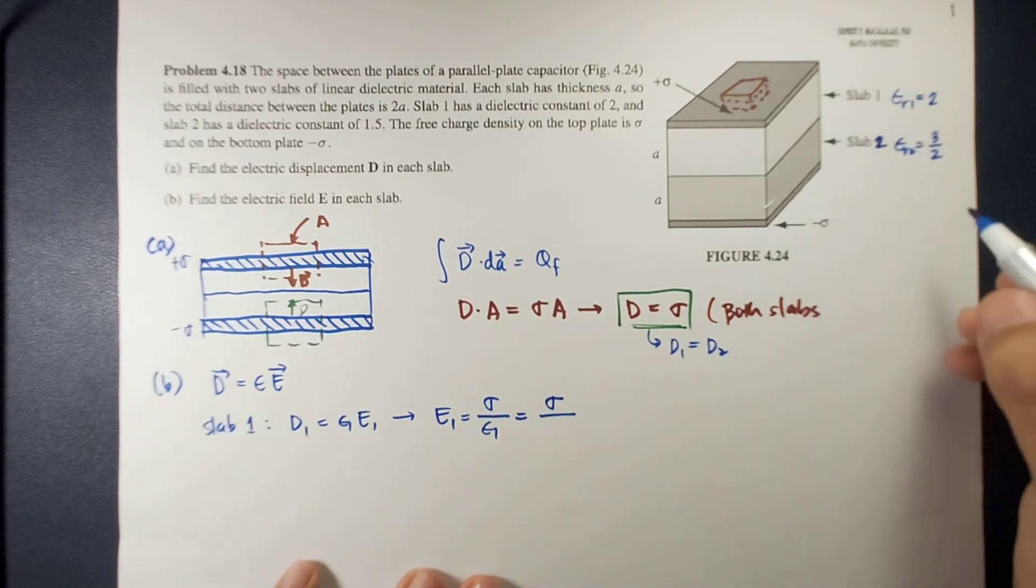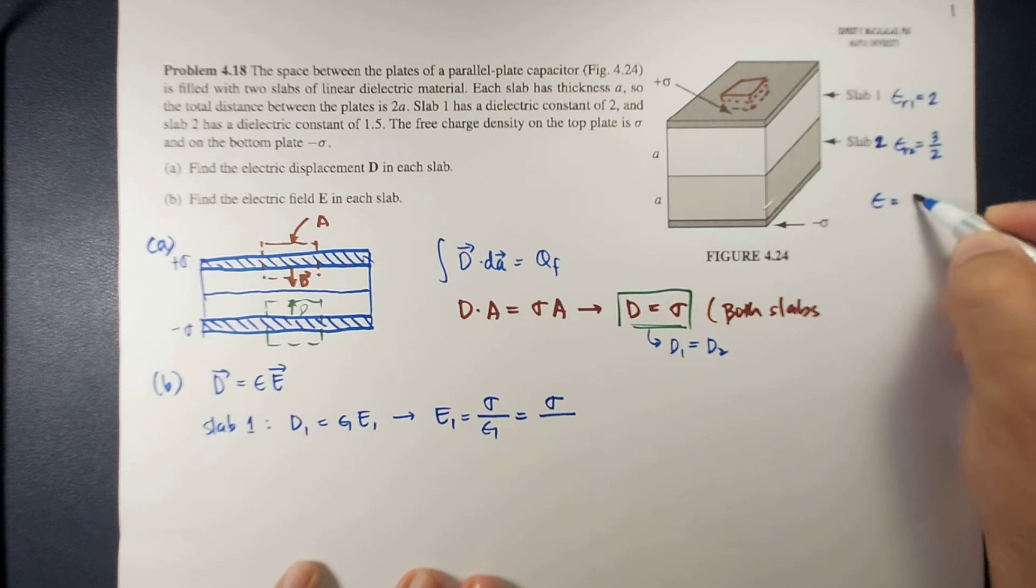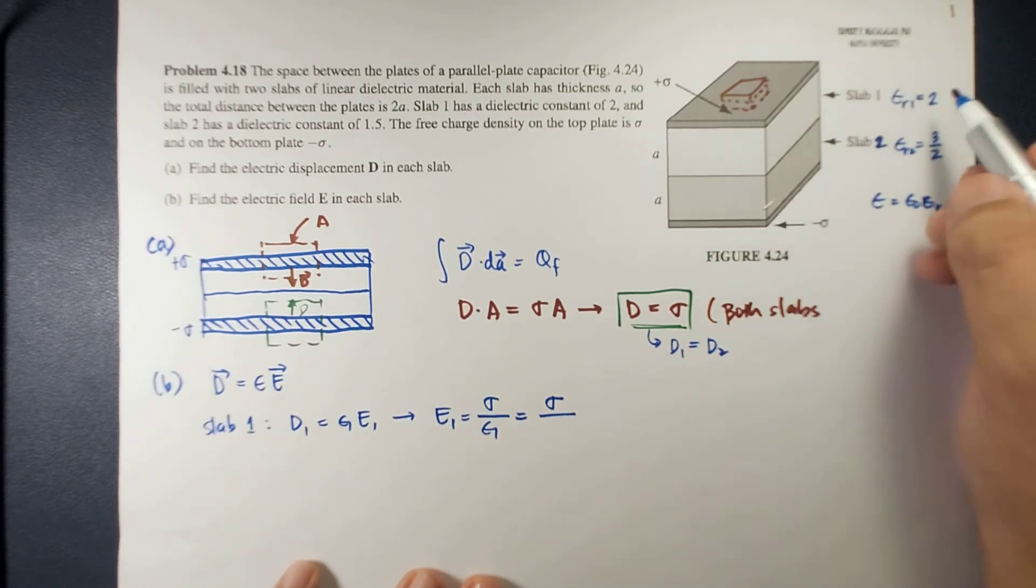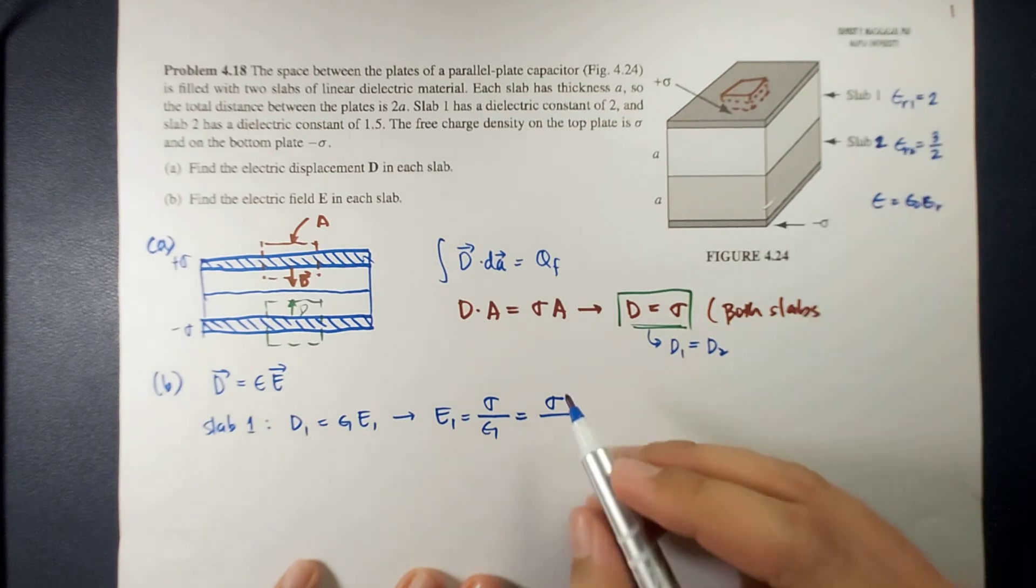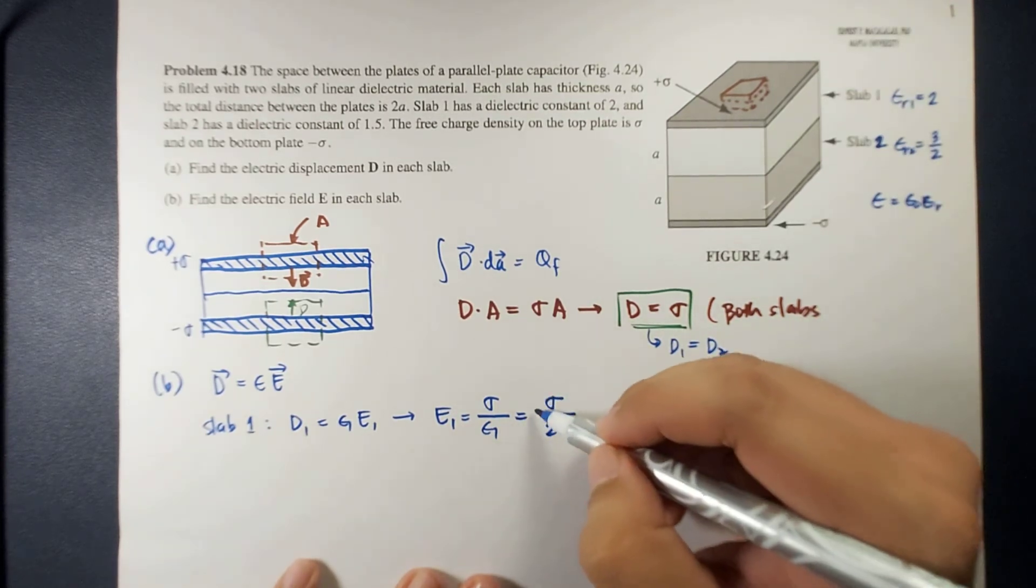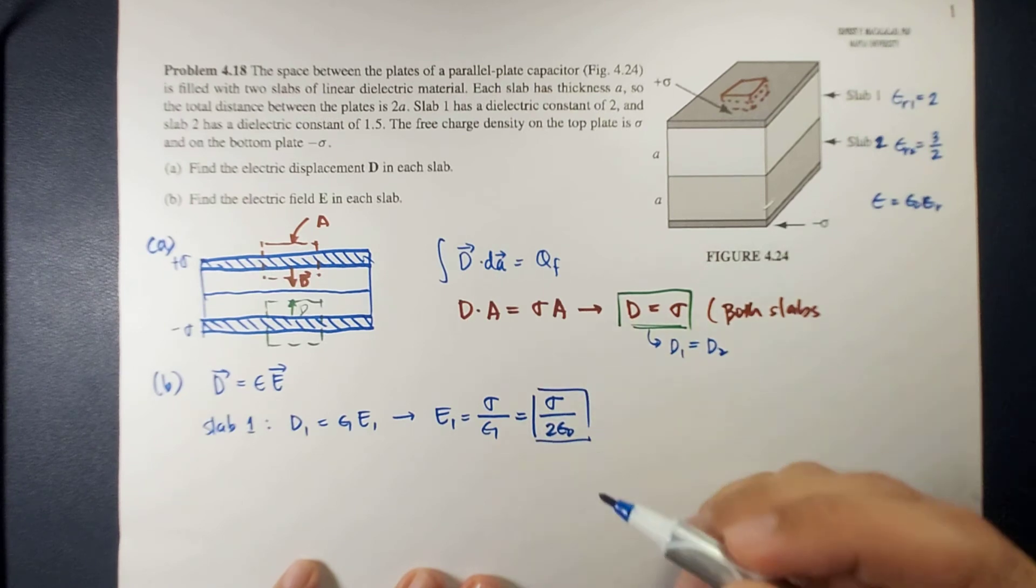So that means epsilon r1 is 2. And then epsilon r2 is 1.5 or 3 halves. Okay, so this is now equal to sigma over epsilon r, this is, remember that epsilon is equal to epsilon naught epsilon r. So epsilon 1 would be 2 times epsilon naught. So this is 2 times epsilon naught. So this is the electric field for slab 1.